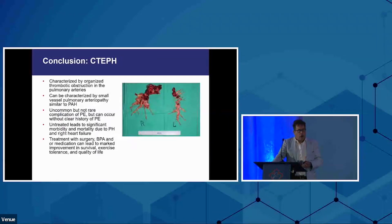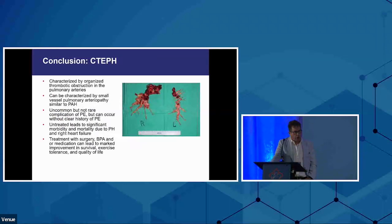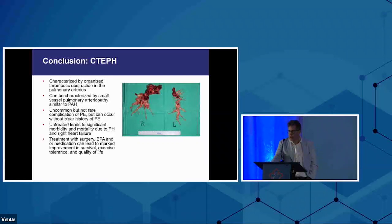Overall, chronic thromboembolic disease is uncommon but not rare, and we can make a huge difference with treatment once we make the diagnosis. We now think of it as a three-compartment model: proximal disease removed with surgery, segmental and subsegmental pulmonary artery disease treated with balloons, and distal microvascular disease treated with pulmonary vasodilators. We now have over 200 patients in our CTEPH clinic in Montreal, and the vast majority are doing well with one or more of these therapies — whereas without diagnosis and treatment, most progress to right heart failure and death. In conclusion, CTEPH is characterized by organizing thrombotic obstruction, can involve small vessel disease, and untreated leads to significant morbidity and mortality. Treatment with surgery, balloon pulmonary angioplasty, medication, or a combination can lead to marked improvement in survival, exercise tolerance, and quality of life.